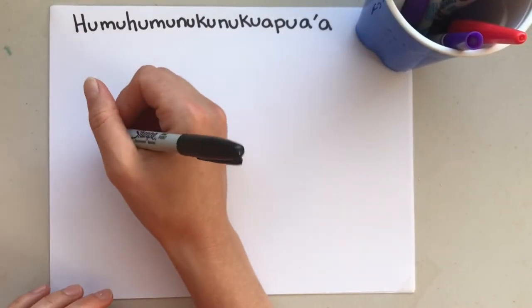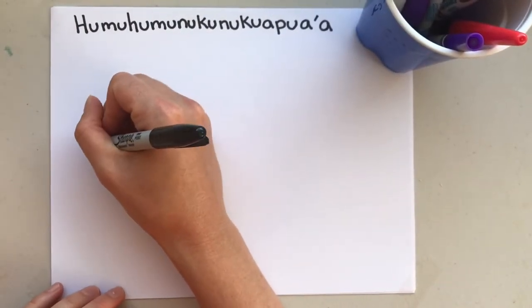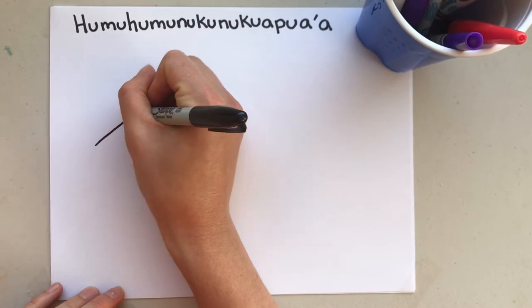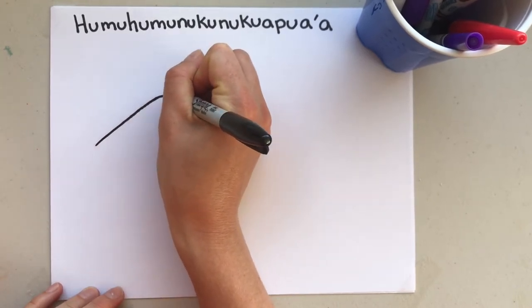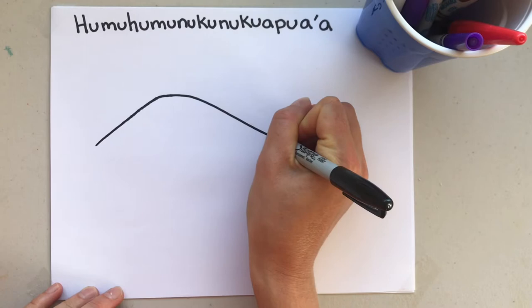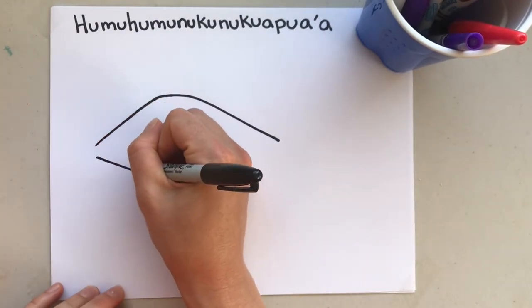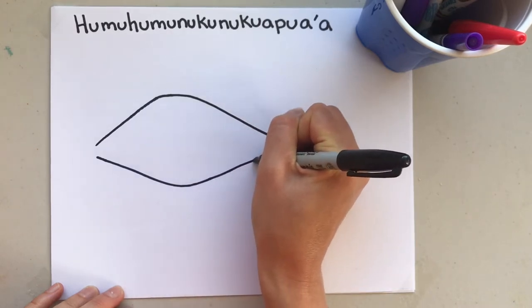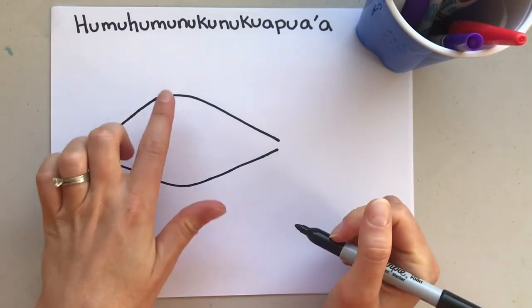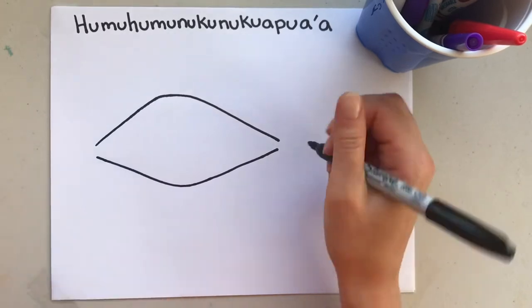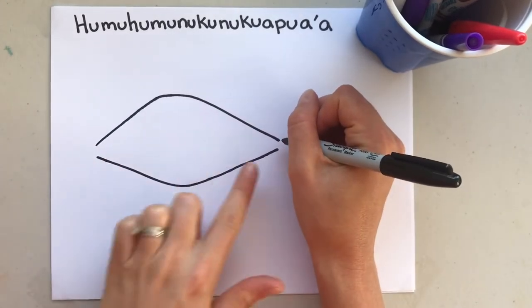To begin, I like to draw a diamond shape for the body of the Humuhumu. I draw a diamond shape that's curved on the top and the bottom.